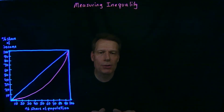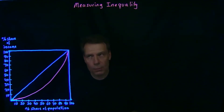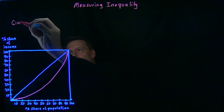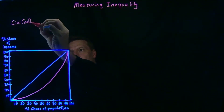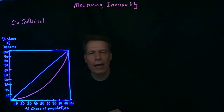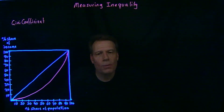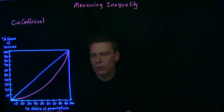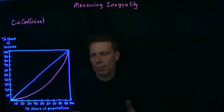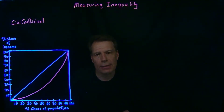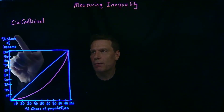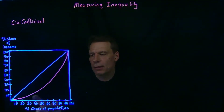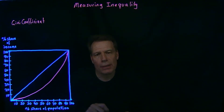The most common measure of inequality is what we call the Gini coefficient. The Gini coefficient is derived from a picture like this, which is one way of graphing a country's income distribution. On the horizontal axis, we have the percentage share of the population, where we line up the population from those with the lowest income to those with the highest income. On the vertical axis, we have the percentage share of income that accrues to the different percentage shares of the population.